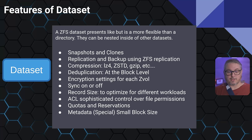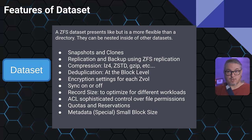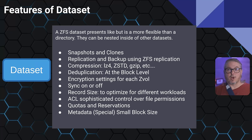Additional dataset features include quotas and reservations. There's also the metadata special small block device option — Wendell from Level 1 Techs has an entire write-up on this, linked below. This setting directs a particular dataset to be indexed on a special metadata VDEV if you have one. For example, you could put small writes on a faster metadata special VDEV and have those indexed there. However, there are a lot of precautions and it's quite in-depth — it's not as simple as just adding it to solve speed problems.